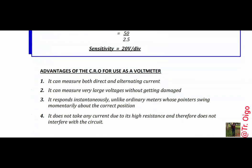The advantages of using a CRO as a voltmeter are: number one, it can measure both direct and alternating current; number two, it can measure very large voltages without getting damaged; number three, it responds instantly, unlike ordinary meters whose pointer swings momentarily above the correct position; and lastly, it does not take any current due to its high resistance and therefore does not interfere with the circuit.